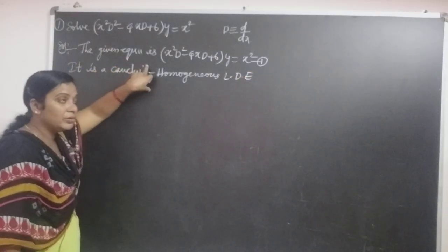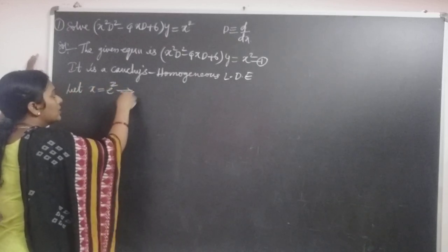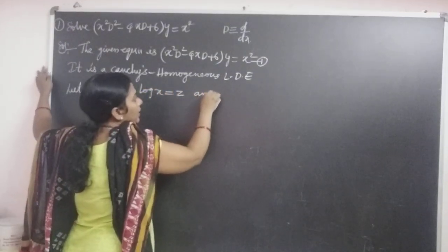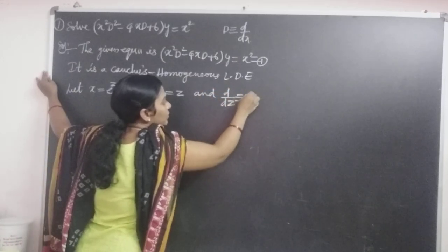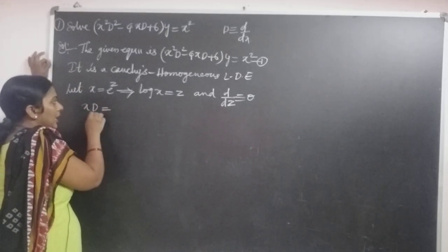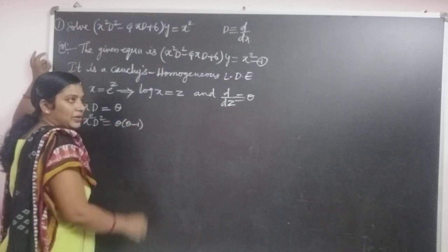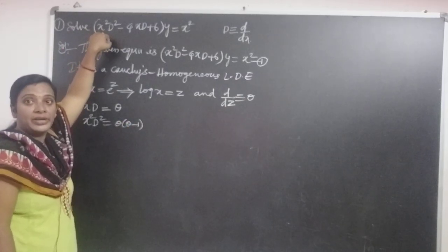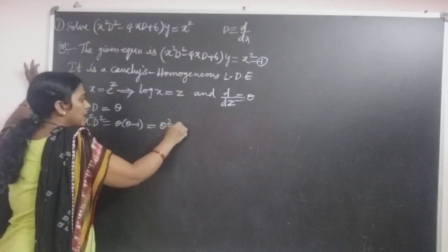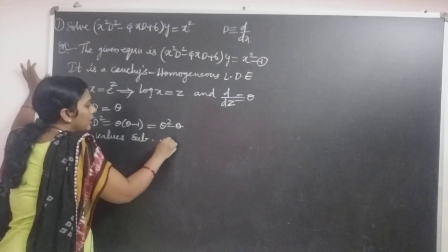It can be solved by the substitution: let x equal to e power z, then taking log on both sides, log x equal to z, and the derivative operator d by dz is equal to theta. Then xD equals theta, and x squared D squared equals theta into theta minus 1. Since there is a second derivative, we take up to the second derivative.